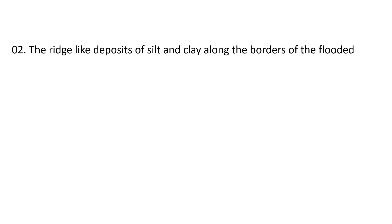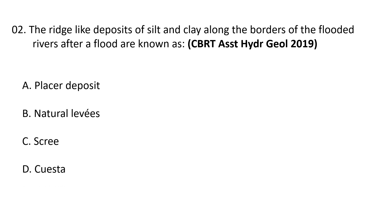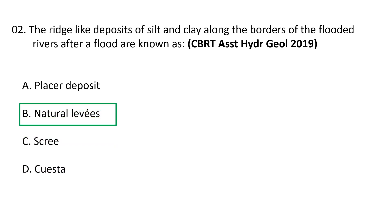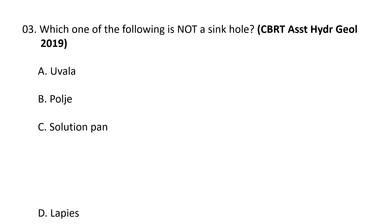Next question: the ridge-like deposits of silt and clay along the borders of flooded rivers after a flood are known as: a) levee deposits, b) natural levees, c) scree, d) cuesta. A deposit of sand or mud built along and sloping away from either side of a river or stream floodplain is known as a natural levee. Natural levees form when a river pushes sediment against a bank; over time these deposits raise the bank and can act as a barrier during storm surges. So the correct answer is natural levees.